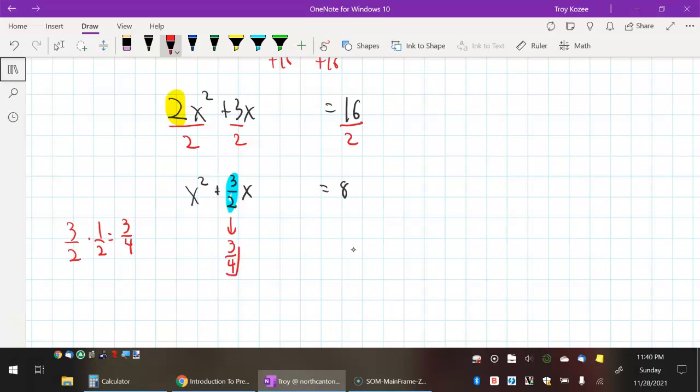I need to remember the 3/4 because this is going to show up in my factor. But we'll get to that. I take this fraction in the middle, I cut it in half, that's 3/4, I square it. That's 9/16. And that's what I add to each side. 9/16 and 9/16.